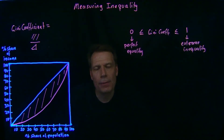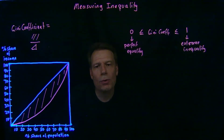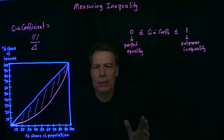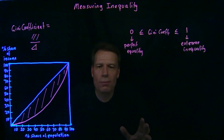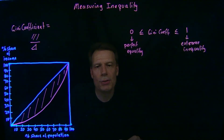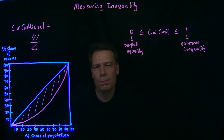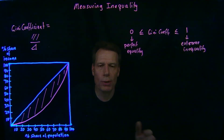For income inequality, what kinds of measures do we actually get in the real world? It depends on what country you're looking at. For the Scandinavian countries like Sweden and Denmark, you would typically calculate an income Gini coefficient of roughly 0.26 to 0.28. For countries like Germany and France, it's around 0.33 to 0.35. For a country like Brazil, we get a measure in the mid-0.5 range, around 0.55 or 0.56. And for the US, we typically get measures somewhere between 0.45 and 0.5.